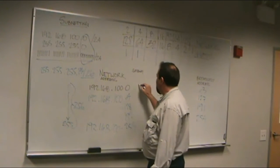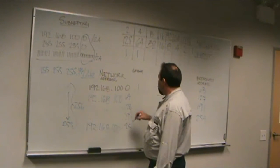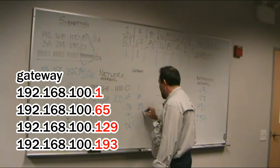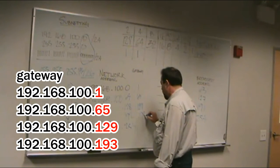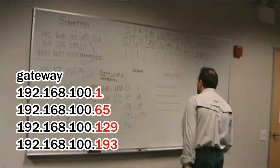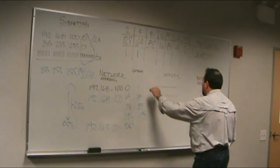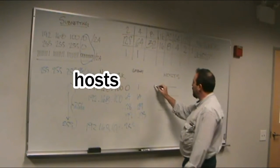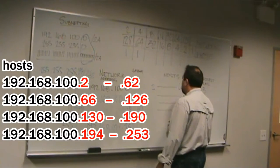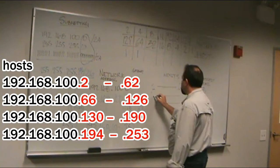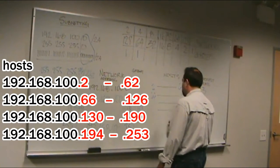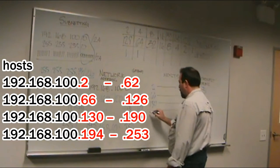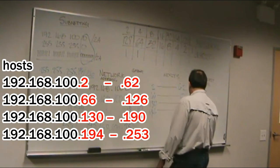Very simple — I'm going to use the next digit: .1, .65, .129, .193, and of course this last one, there is none. I now have my network address, my gateway, my broadcast address. Now the numbers I can assign to hosts: here it's 2 through 62; here 66 through 126; here 130 up to 190; and 194 to 253.